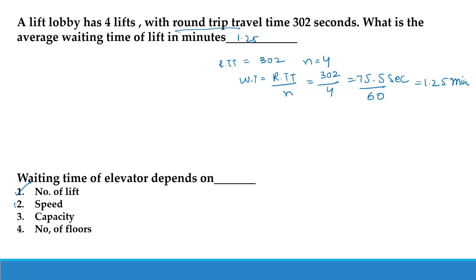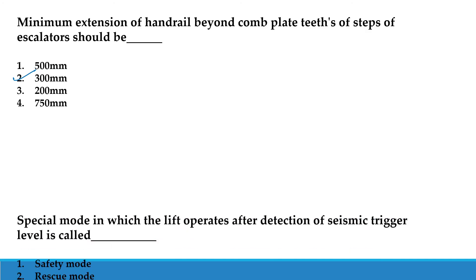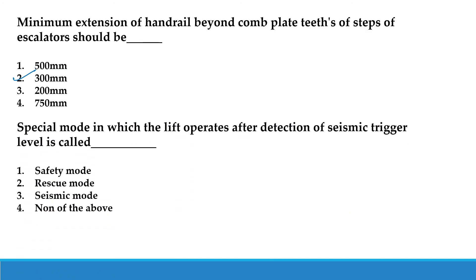The waiting time of an elevator depends upon: number of lifts, speed of the lift, capacity of the lift, and number of floors — the answer is all four. The minimum extension of the handrail beyond the complete depth of escalator steps should be 300 mm. A special mode in which the lift operates after detection of a seismic trigger level is called Seismic Mode. Refer to NBC for these types of questions.